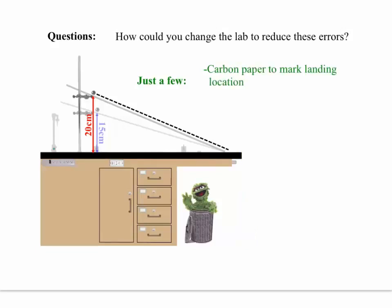An alternate approach to dealing with the can height would be to eliminate the can altogether. When the ball lands, its landing position can be marked using some carbon paper, which, if you have a checkbook, that's the paper that's used to make a carbon copy of the check that you write.